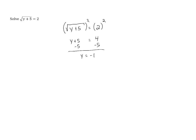This gives us y equals negative 1, which is a potential solution, but we always have to check for extraneous solutions when we square both sides of an equation.